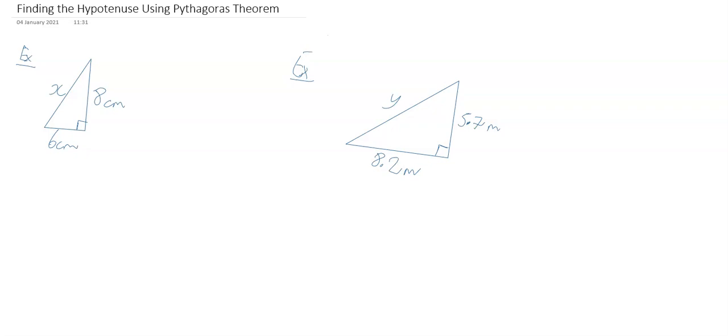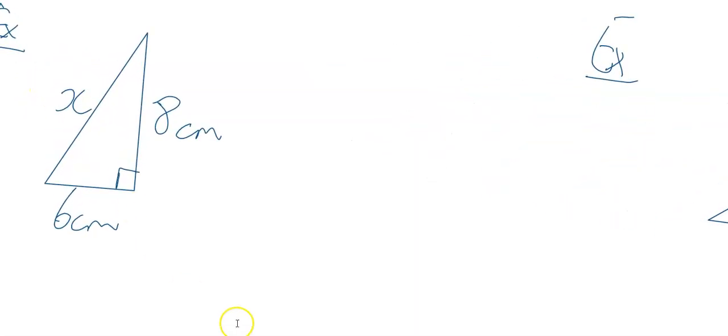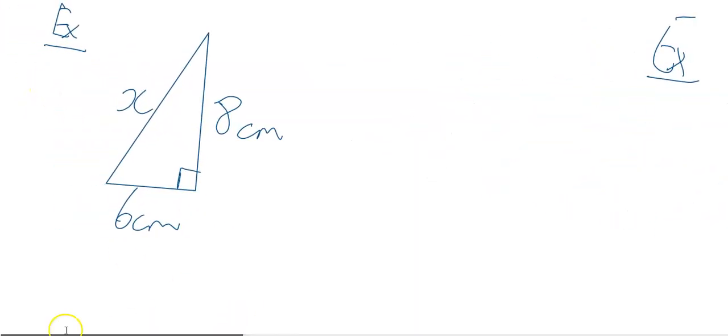In this video we're going to look at finding the hypotenuse using Pythagoras' Theorem. Pythagoras allows us to find missing sides in right-angled triangles. We've got two right-angled triangles, and both of these are missing the hypotenuse. We're going to zoom in on this first example and get started.